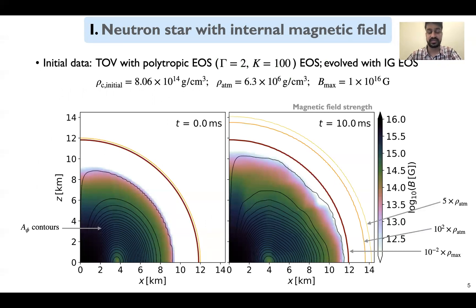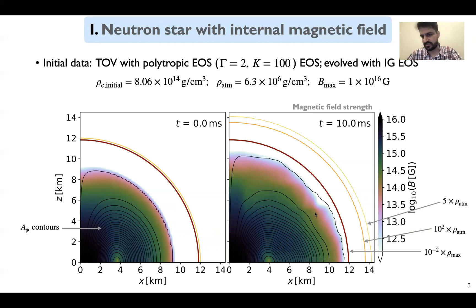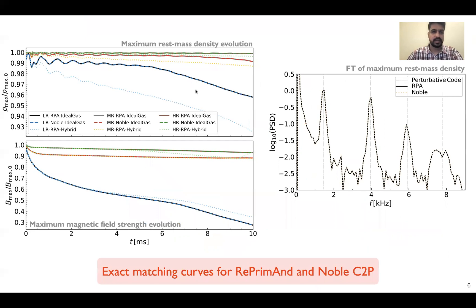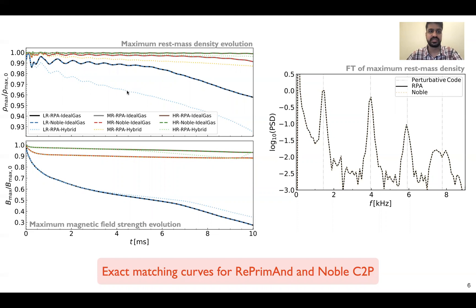For the first test, we considered the magnetized TOV star and we endowed it with an internal poloidal field, as you can see on the left panel here on the meridional plane. We evolved this configuration for about 10 milliseconds, and we see that the magnetic fields are rather well-sustained. Here on this slide, you have on top left the evolution of maximum rest mass density, and on the bottom panel, the maximum magnetic field strength evolution for the same TOV configurations using different resolutions and using the ideal gas as an evolution EOS. For a comparative study, we performed the same set of simulations with another C2P scheme of Noble et al., which is very much used by the community, and we find exactly matching curves.